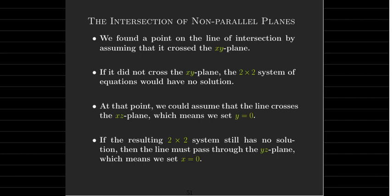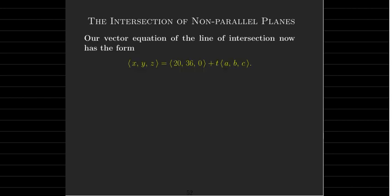We could make an assumption that it intersects the x-z plane and set y equal to zero, or assume that it intersects the y-z plane and set x equal to zero. And we will find a point on both lines.